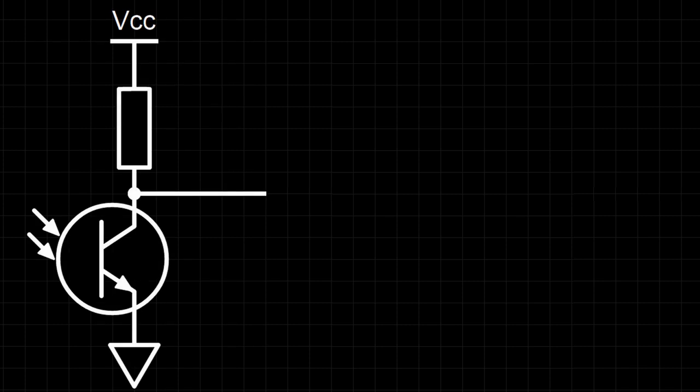Our goal is to set up the phototransistor in such a way that it will output a high or low signal depending on whether it's illuminated or not. We can do this with the following circuit. Essentially, a voltage, labeled here as VCC, is applied across a resistor in series with a phototransistor. This setup should make you think of a voltage divider, though strictly speaking this isn't one as the phototransistor doesn't have a fixed resistance value for a given intensity of light.